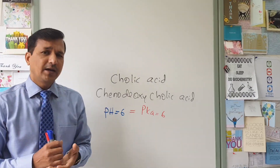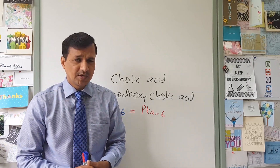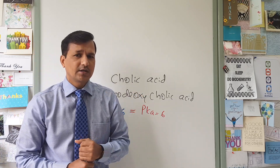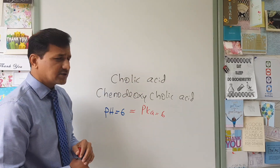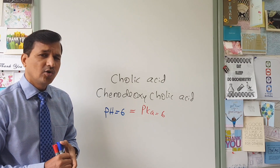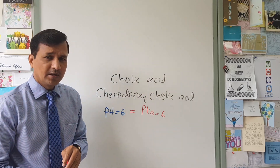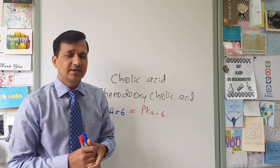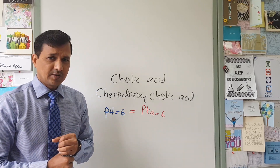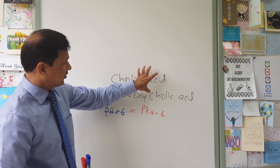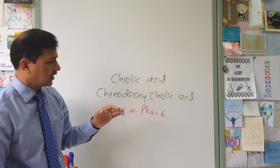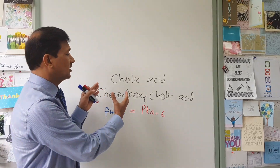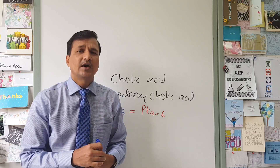The purpose of bile acids in the duodenum is to participate in emulsification. Cholic acid can only participate in emulsification in its deprotonated form, because the deprotonated form carries a negative charge, giving the molecule polarity — a polar part and a non-polar part — necessary for micelle formation. If only 50% is in deprotonated form, then only 50% of these molecules are effective and the rest do not participate in emulsification.